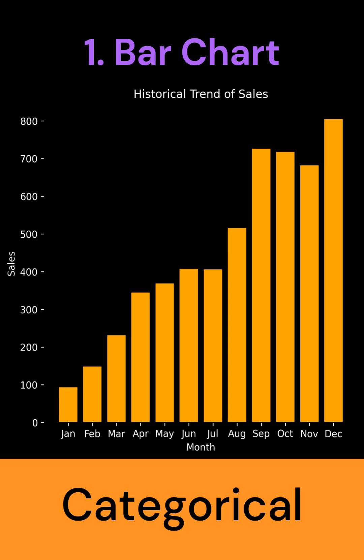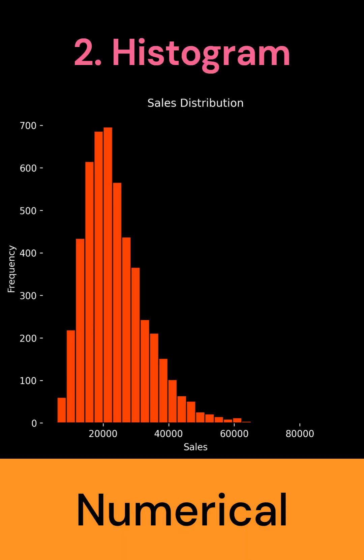Bar charts represent distribution of categorical variables, e.g. monthly sales. While histograms represent the distribution of numerical data, e.g. sales price.